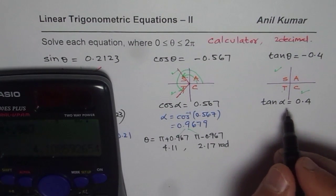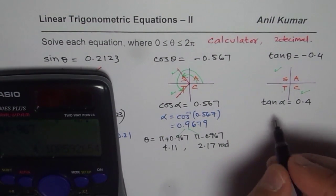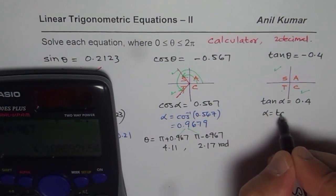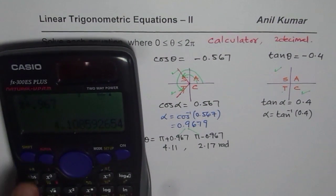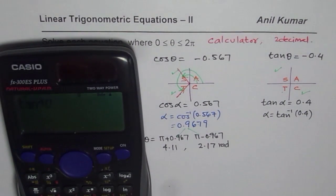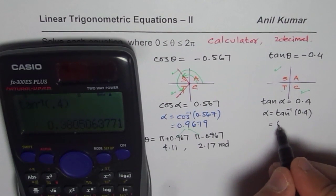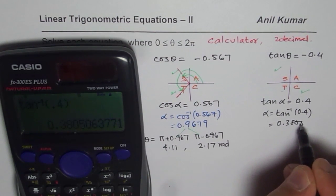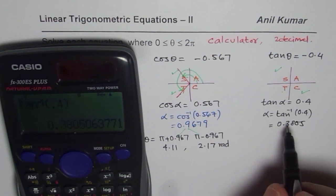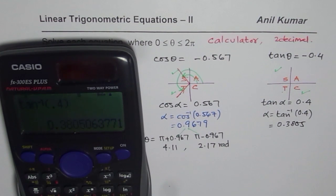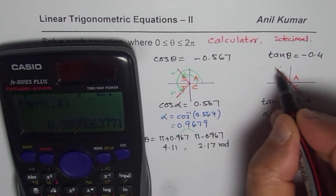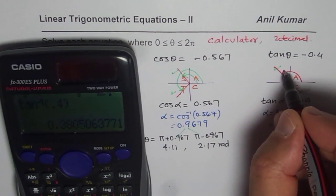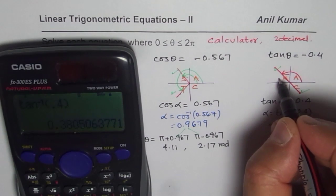These are the two possible solutions in the domain 0 to 2π for cos θ = -0.567. Let us look into the last one. In this case, tan α = 0.4. So α = tan⁻¹(0.4). We will do shift tan inverse 0.4 equals to, we get one acute angle, and that is 0.3805. Since tan is negative in quadrant 2 and 4, we are trying to get answers here.